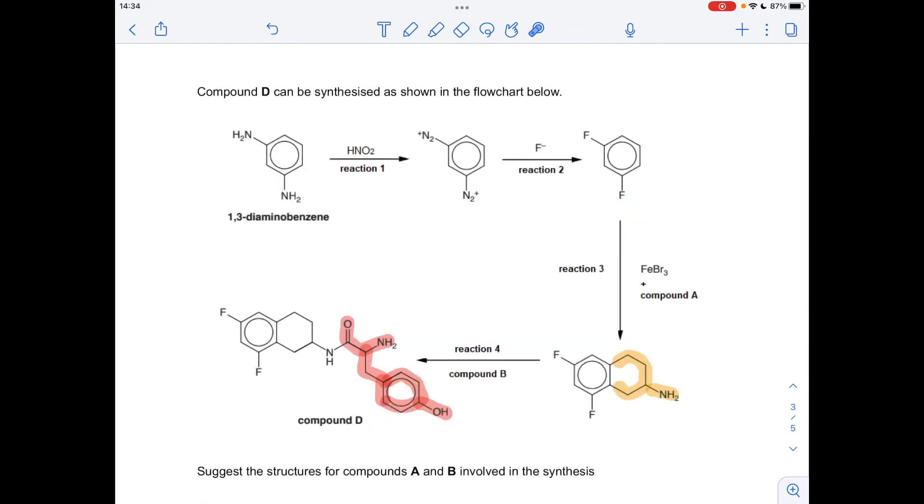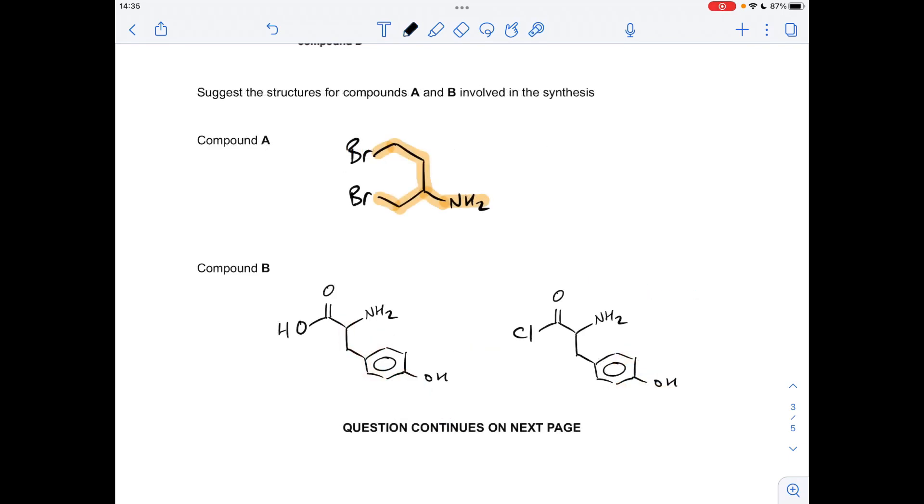And going back to the flowchart, how could we get this onto here? Well, there's a couple of options. You could either go for a carboxylic acid group at the end here, or you could go for an acyl chloride group. So either of those are perfectly acceptable.